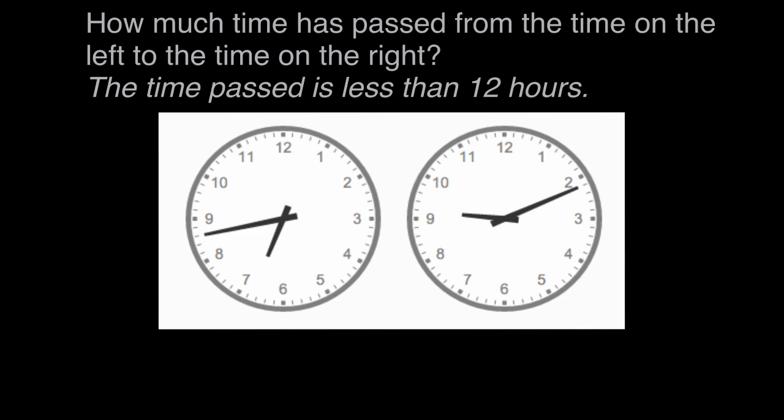How much time has passed from the time on the left to the time on the right? We have a clock on the left and a clock on the right with different times shown, and we want to know how much time has passed from the first time till the second time. We're also told the time passed is less than 12 hours. That's helpful—that means we know this first clock wasn't, say, sometime on Monday, and the second one sometime on Wednesday with these hands going around and around.